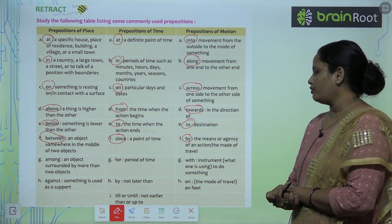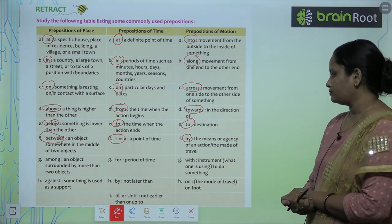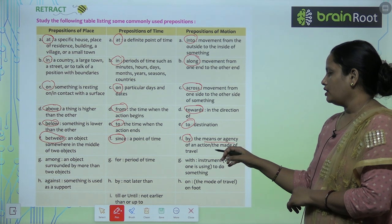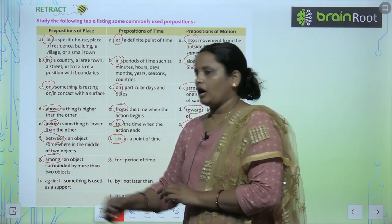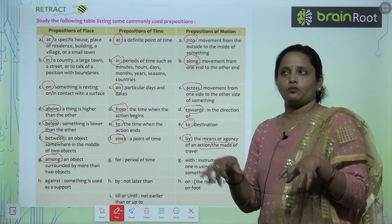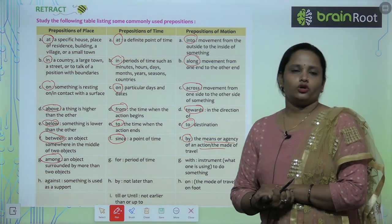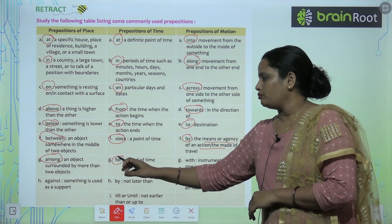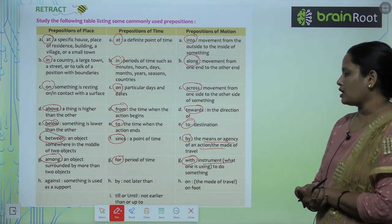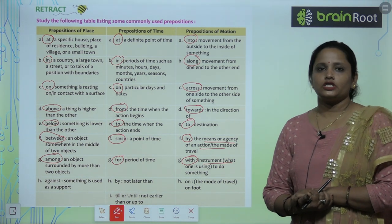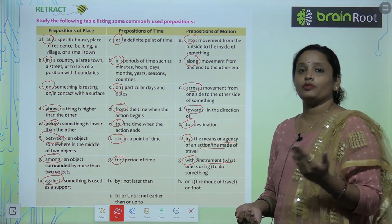'By' indicates the means or agency of an action and the mode of travel — means aur mode of travel bataata hai. 'Among' means kisi cheez ke beech mein — an object surrounded by more than two or three objects. 'For' indicates a period of time. 'With' is used as an instrument to do something. 'Against' tells that something is used as a support.